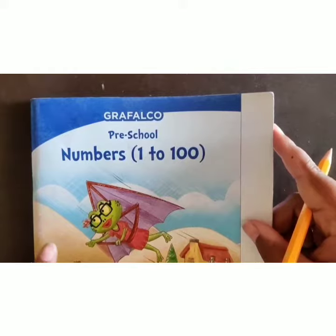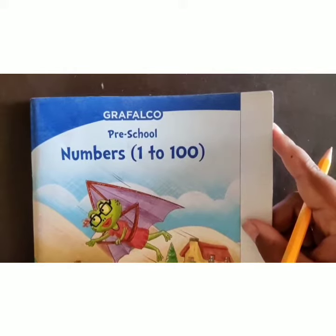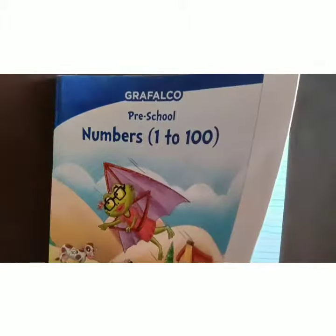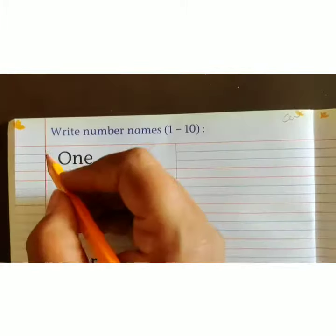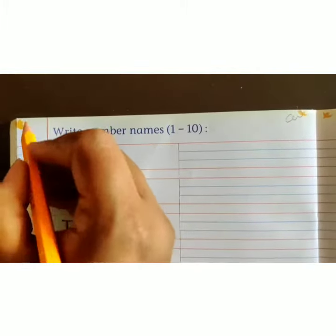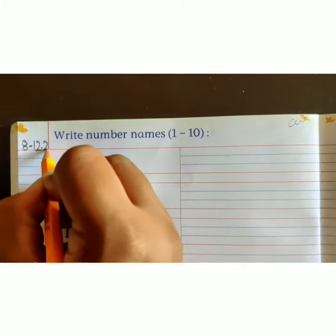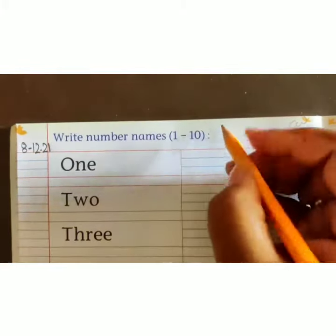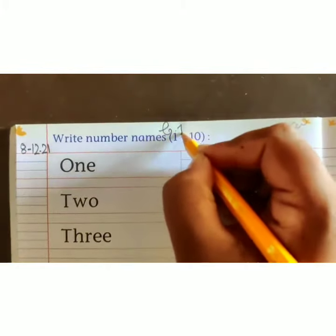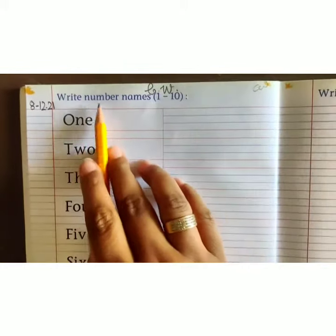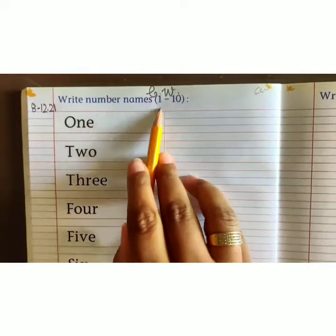Today we will write in numbers 1 to 100 book. Open your book at page number 52. Write here today's date, that is 8-12-21. Write here classwork: capital C dot, capital W dot. Write number names 1 to 10.